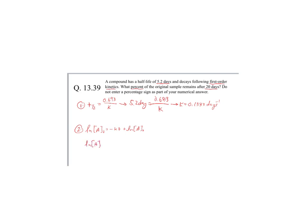So natural log of concentration equals my rate constant negative 0.1333 days to the inverse 1 times 20 days plus the natural log of my initial concentration, which we just said to make our lives easy. Let's call that 1.